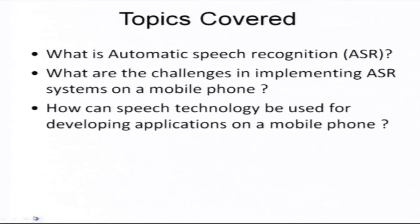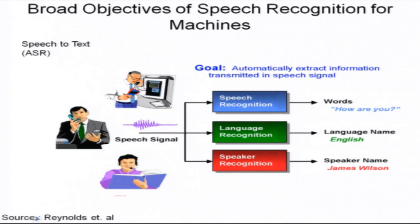We will also discuss how speech technology can be used for developing applications on a cell phone by taking some typical examples. The goal of automatic speech recognition is to automatically extract information transmitted in the speech signal. You can also call speech recognition as a process by which the incoming speech signal is converted to text. Many people also refer to this as signal to symbol transformation — you have a speech signal recorded over a microphone which needs to be converted to text.